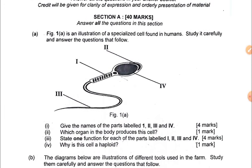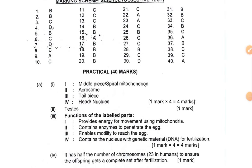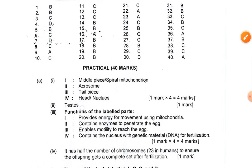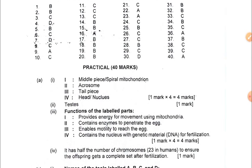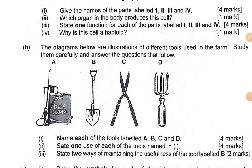Looking at question 1a, we have a diagram labeled I2 ivy. We are asked which organ in the body produces the cell, one function of I2 ivy, and why the cell is haploid. It is found in the testes. The cell is haploid because it has 23 chromosomes.